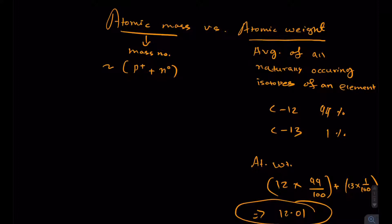That's what you're gonna see on the periodic table. If you look at the periodic table, carbon has the atomic weight written somewhere here: 12.01. That's what we're gonna use. So atomic weight is the average of all naturally occurring isotopes.